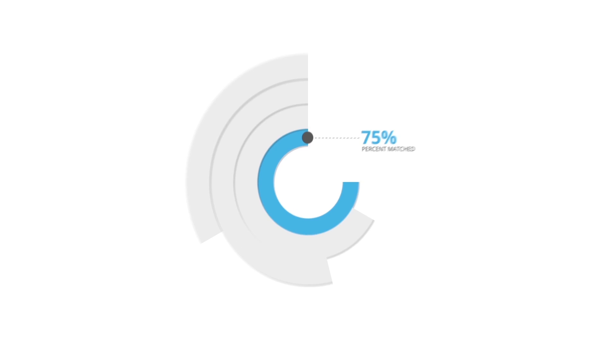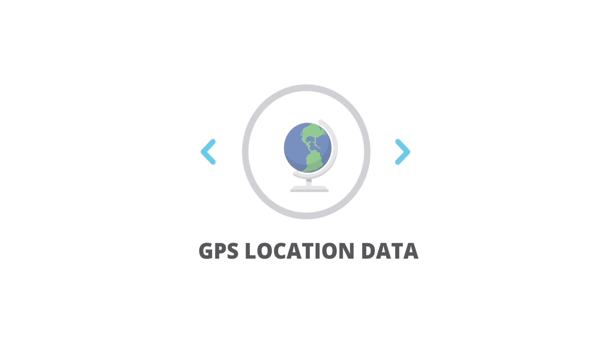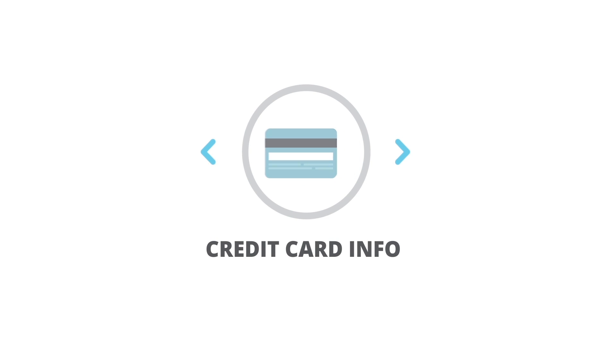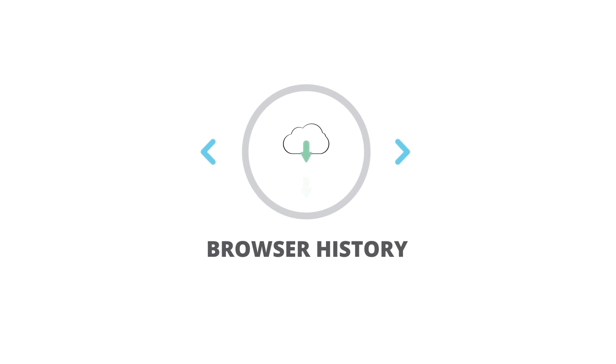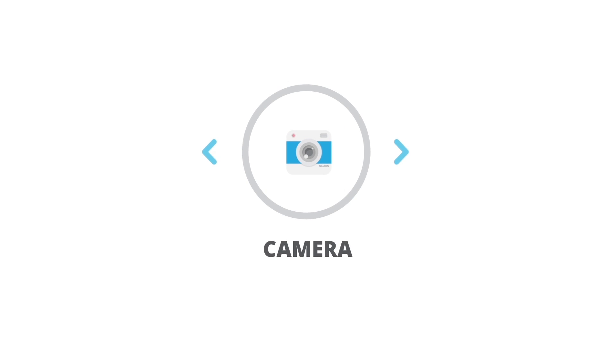What kind of information will we collect about you to make this work? We collect your GPS location data, credit card information, data sent to and from your device, browser history, contacts, calendar, and camera.